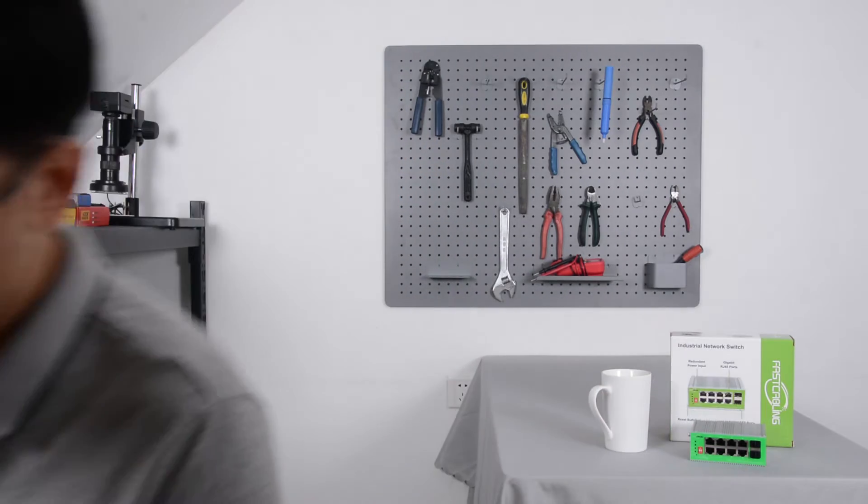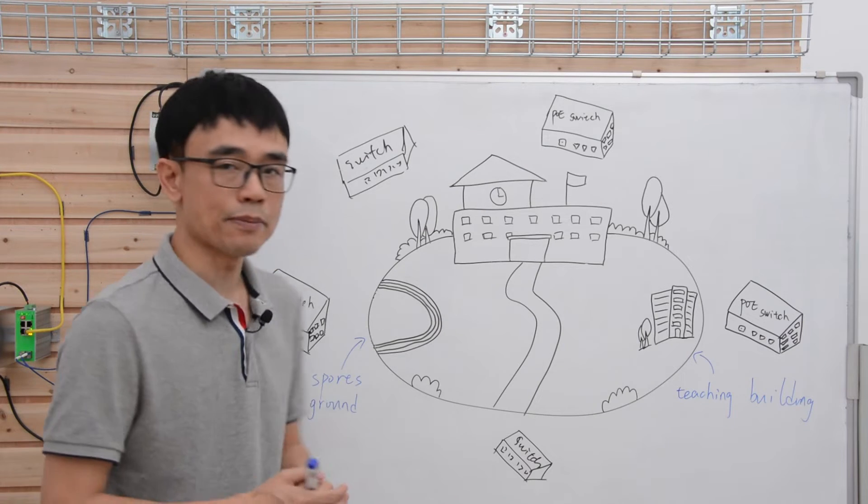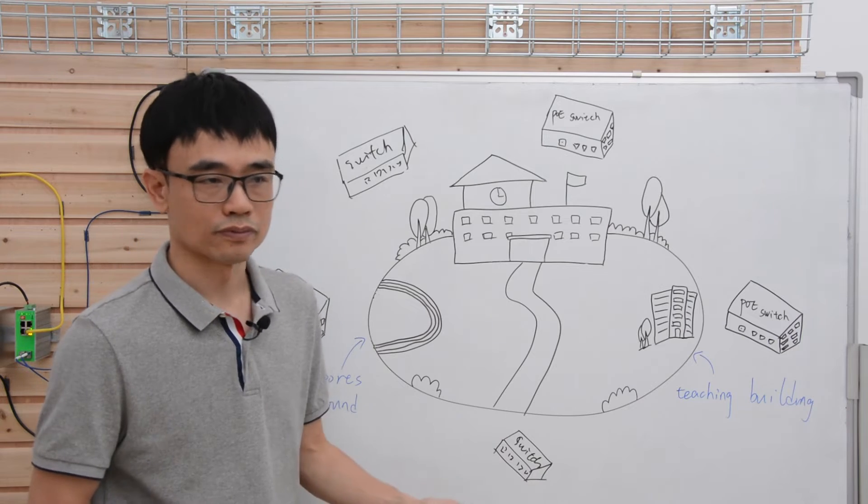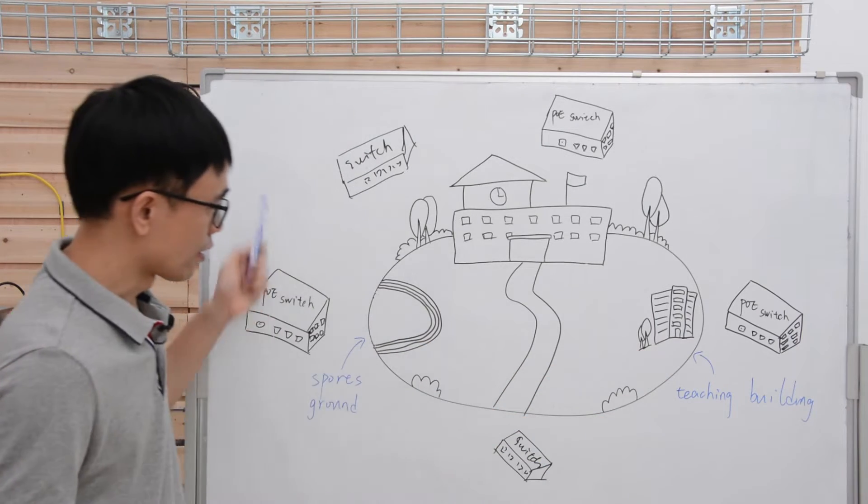First, let's move to the whiteboard and see why we need to daisy chain the switch for the campus. This is the campus. We need to set up the IP camera system around the perimeter of the campus. We have switches sitting around the campus.